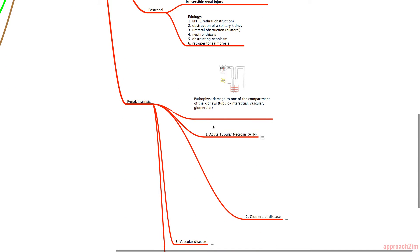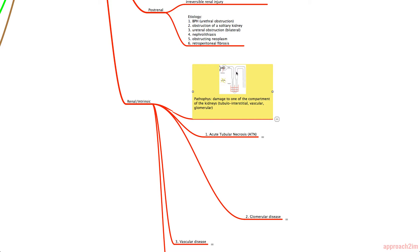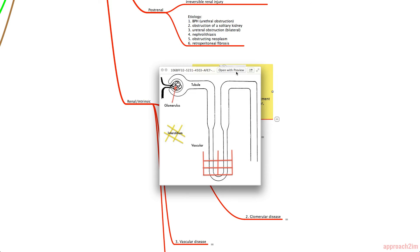Intrinsic AKI is essentially damage to one of the compartments of the kidneys — either the tubule, the glomerulus, the interstitium, or the vascular network surrounding the nephron.